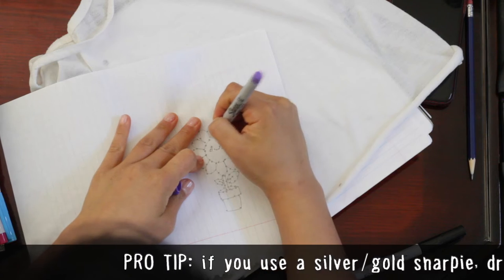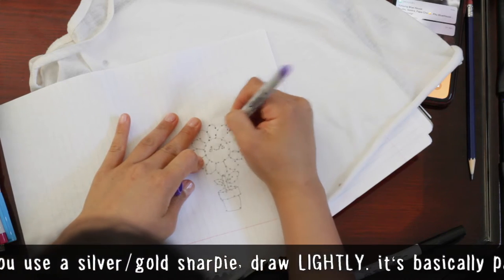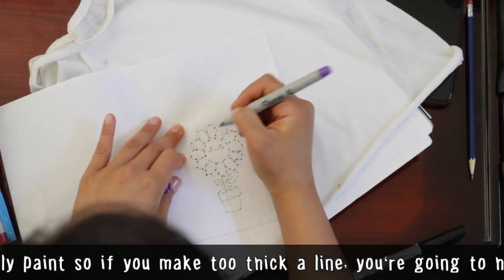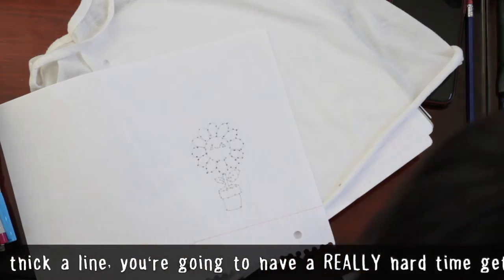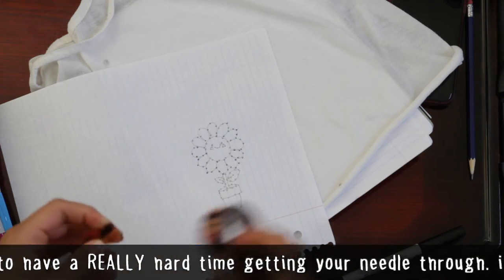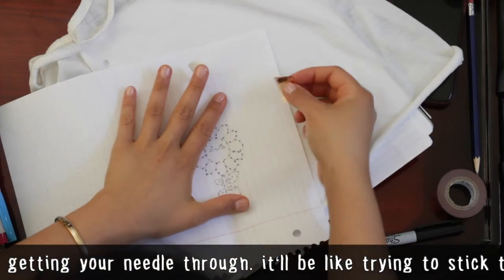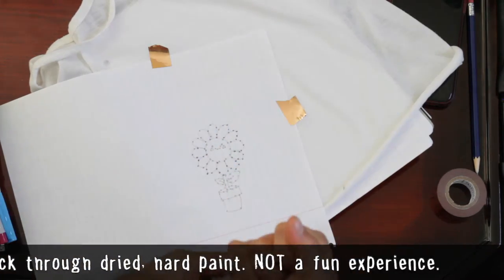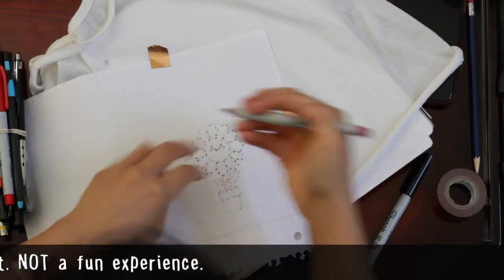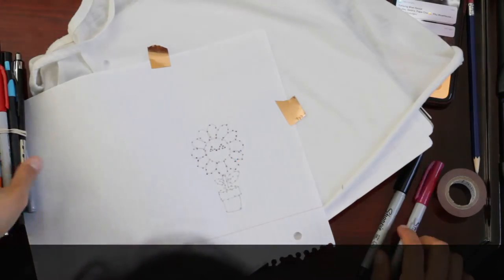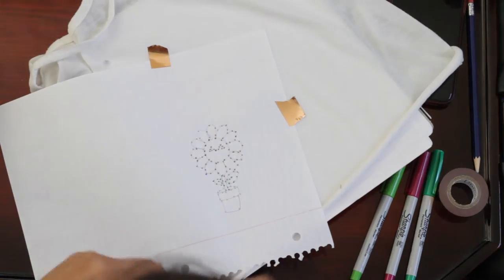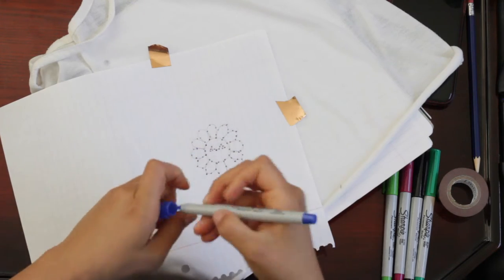I use colors of the thread that I'm going to end up using so that even if you kind of see it underneath, it doesn't stand out too much. Like if I were going to use yellow but I use black Sharpie, then you'd be able to see the black dots and I just don't think that's cute. Also, I should have done this in the beginning, but put a little bit of tape to keep the paper in place so that it doesn't start shifting around as you're putting the holes into the design. So you're just going back into the holes that you had made with the pencil while you're trying to do it onto the shirt. And you want to check that you can see the design before you take off the paper.